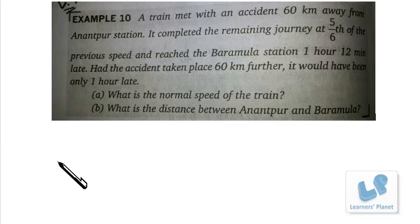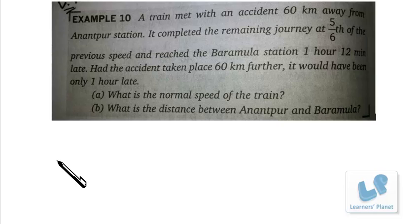Hello friends, in this video I'm solving a problem from the topic time, speed and distance. The problem is sent by a student. A train met with an accident 60 km away from Anantapur station. It completed the remaining journey at 5/6 of the original speed and reached Baramola station 1 hour 12 minutes late. Had the accident taken place 60 km further, it would have been only 1 hour late. We have to find the normal speed of the train and the distance between the two stations.